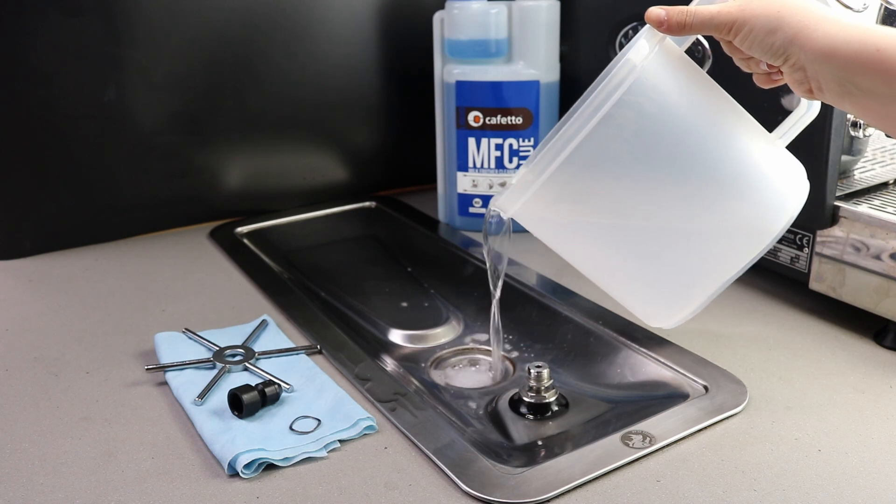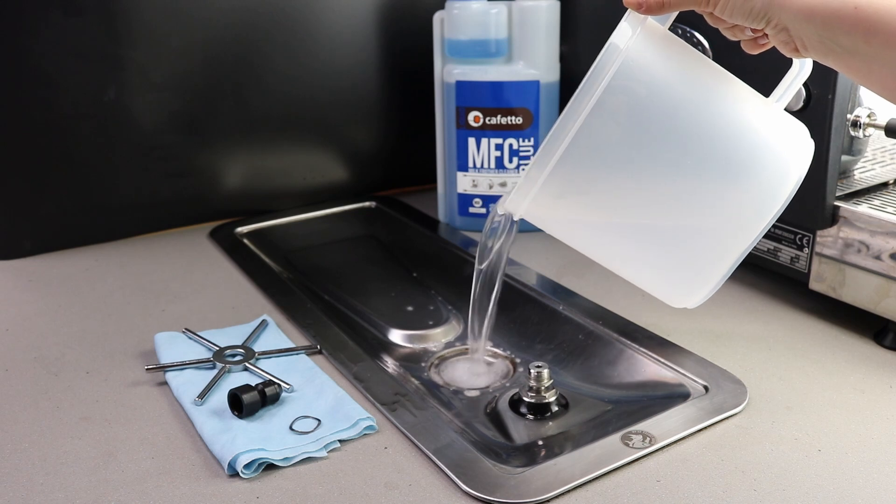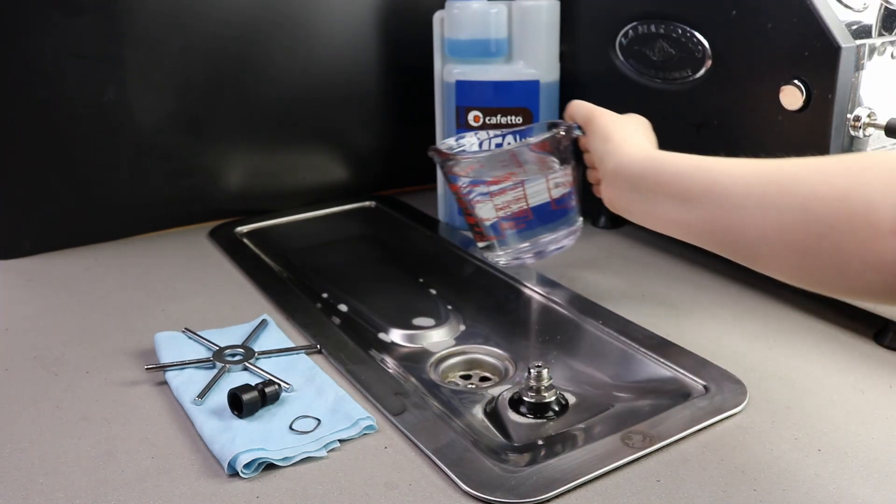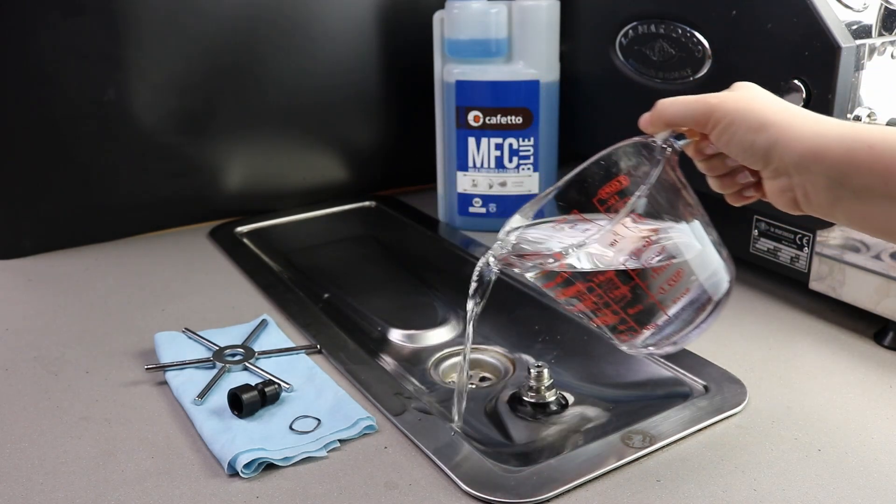Pour the remaining solution down the rinser drain. With a clean container, use 500ml of fresh water to rinse the cleaning solution down the drain.